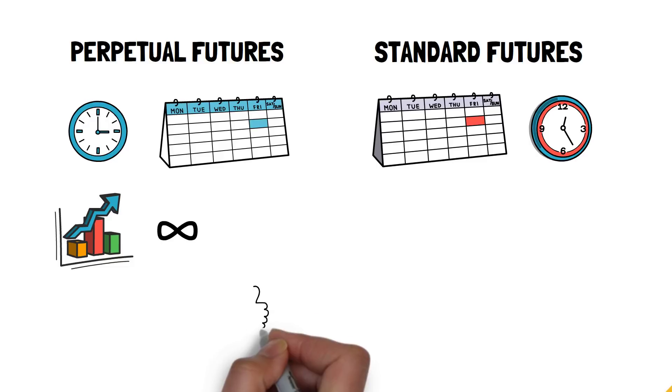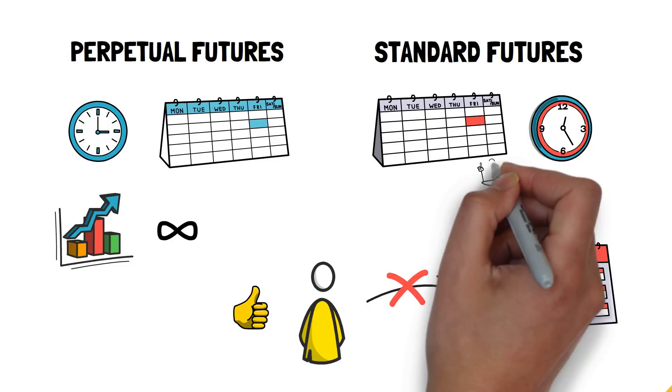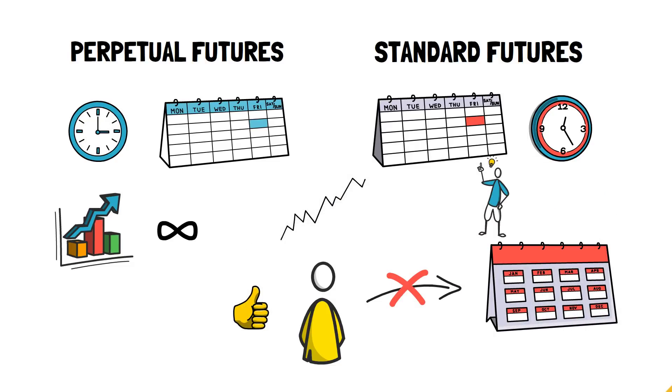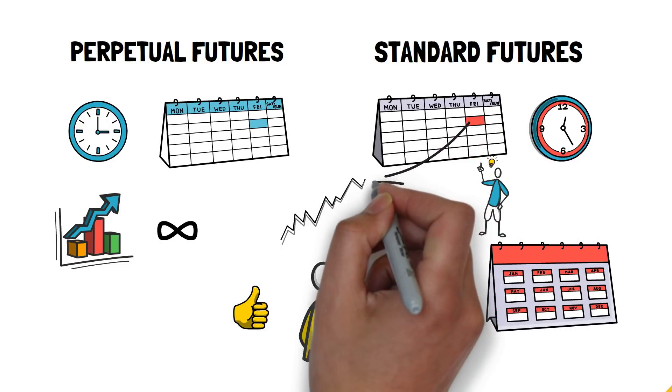Not having the settlement date can be quite beneficial for traders as they don't have to deal with multiple contracts with different settlement dates. In standard futures, the settlement date is quite important as it allows the price of future contracts to converge with the actual price of their underlying asset as the settlement date approaches.